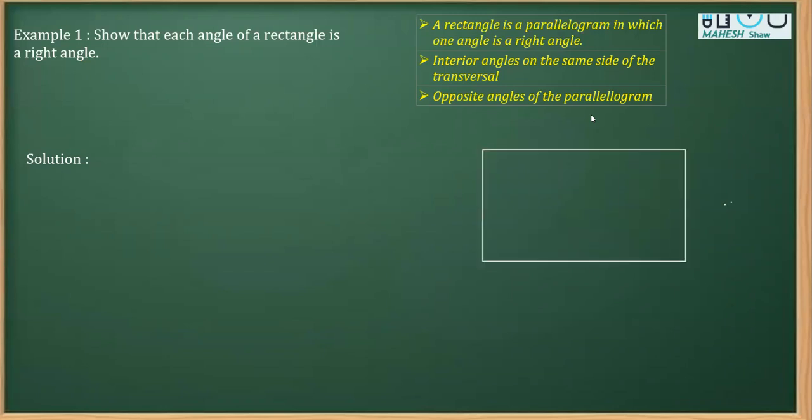So, I draw a rectangle here and I name it as ABCD. So, we have taken ABCD as a rectangle. Now, I'm going to prove each angle of this rectangle, say angle A, angle B and angle C as well as angle D as 90 degree.